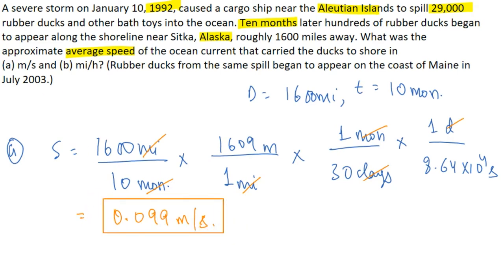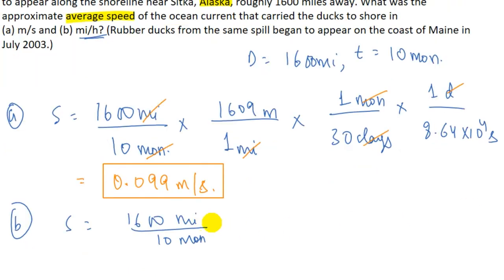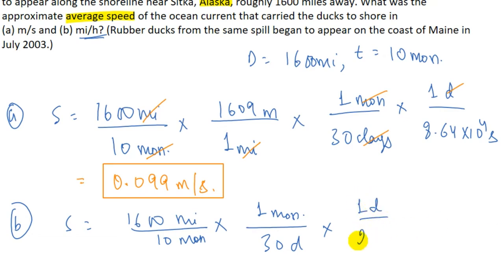For part b, we write the answer in miles per hour. Speed equals 1600 miles divided by 10 months. We convert months to hours: one month has 30 days and one day has 24 hours. This gives us 0.22 miles per hour, which is the answer for part b.